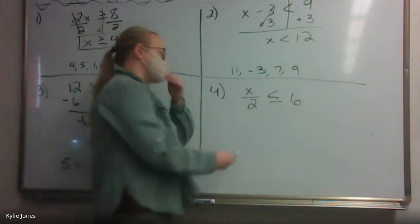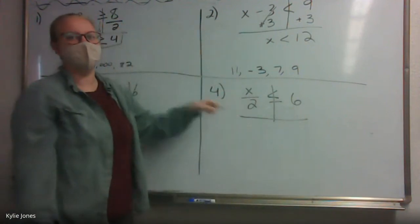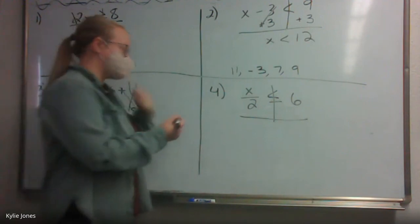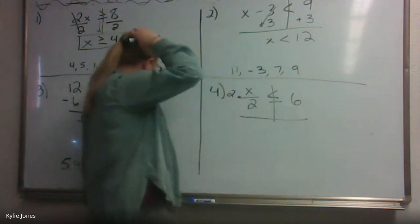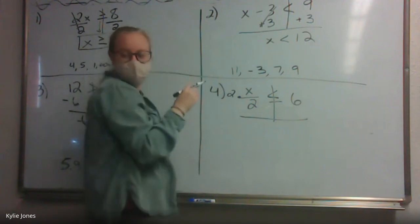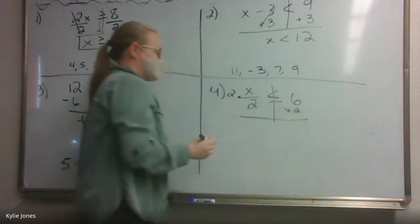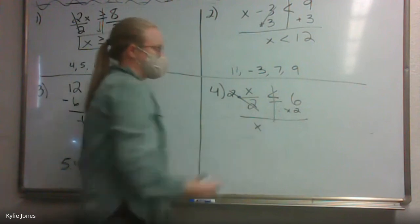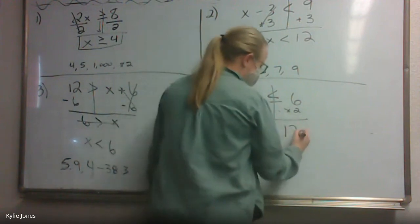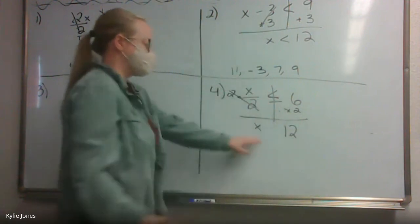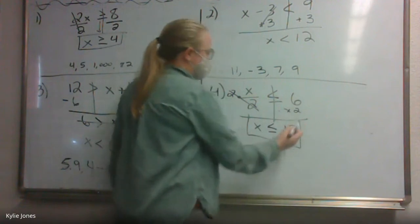Number 4, our last one. This time we have x divided by 2. What's the opposite of dividing by 2? Multiplying by 2. We are going to multiply by 2 on both sides — a dot means multiplication. This 2 and 2 will cancel, leaving x. What is 6 times 2? 12. Then we drop down our inequality. x is less than or equal to 12.